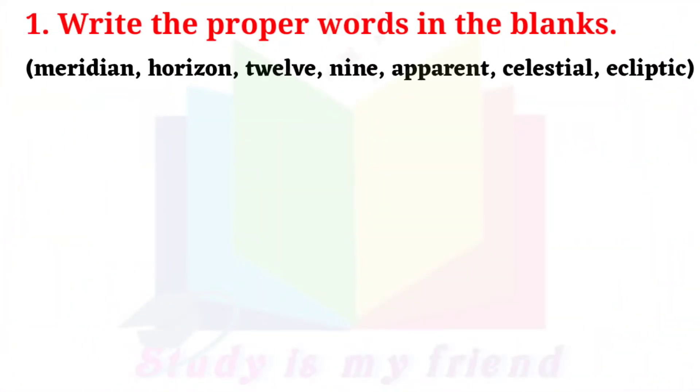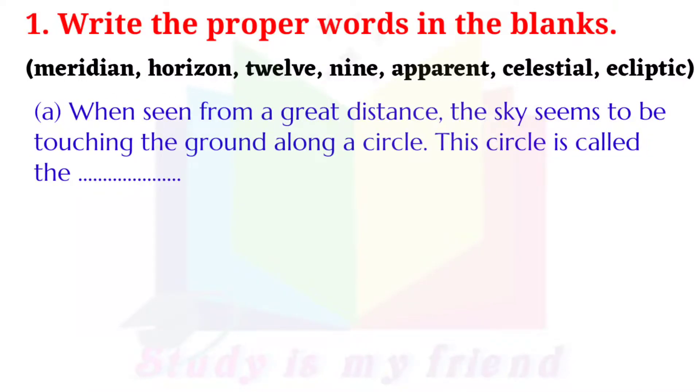1. Write the proper words in the blanks. a. When seen from a great distance, the sky seems to be touching the ground along a circle. This circle is called the horizon.